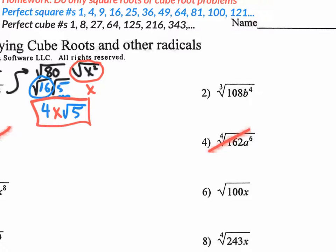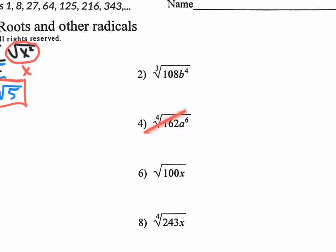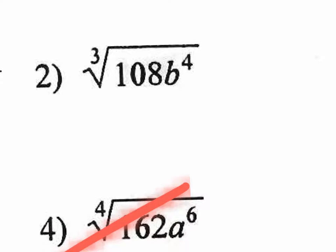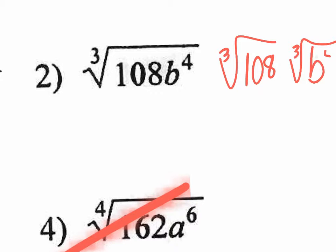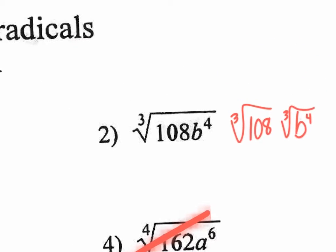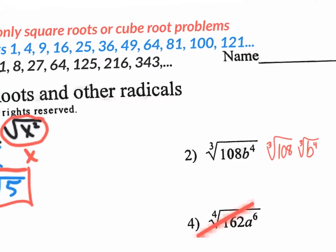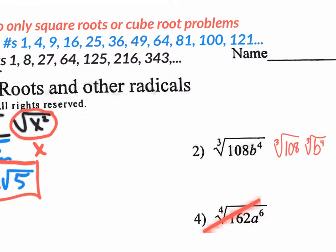Just like square roots, we can split radicals. So I'm going to split that cube root into the cube root of 108 and the cube root of b⁴. Now 108 is not a perfect cube number, so I need to break it down with multiplication to get a perfect cube number. 64 times 2 is 128, already too big. So it's either 8 or 27. Dividing 108 by 27 gives 4, so 108 = 27 × 4.